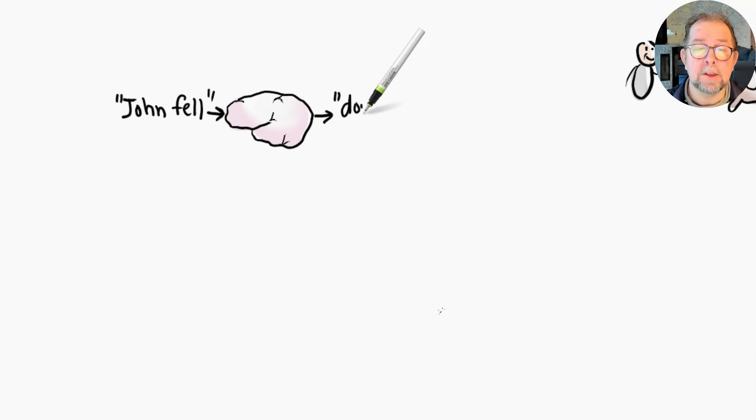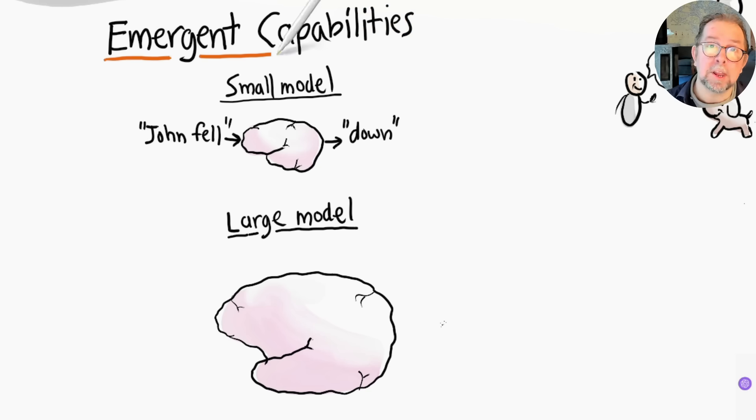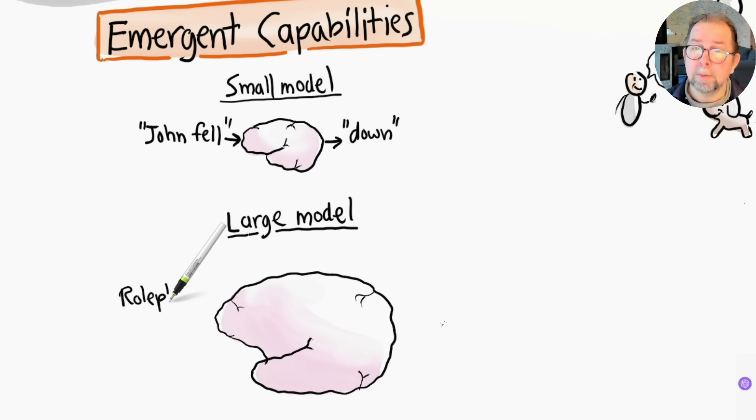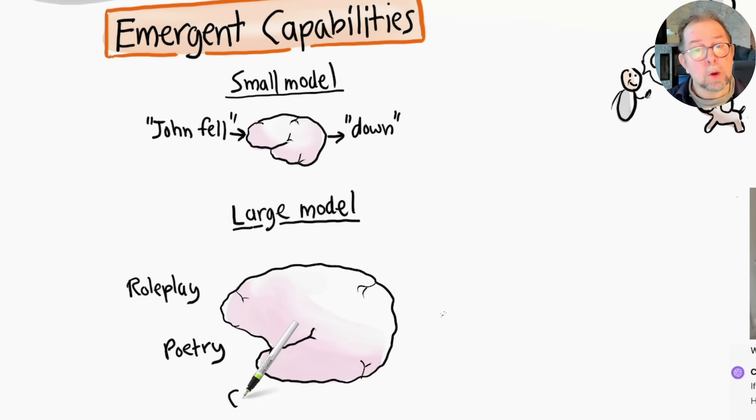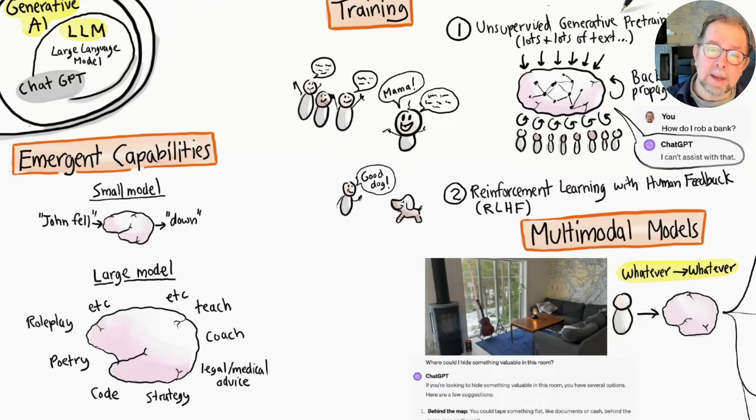Initially, language models were just word predictors, statistical machines with limited practical use. But as they became larger and were trained on more data, they started gaining emergent capabilities—unexpected capabilities that surprised even the developers of the technology. They could role play, write poetry, write high-quality code, discuss company strategy, provide legal and medical advice, coach, teach—basically creative and intellectual things that only humans could do previously. It turns out that when a model has seen enough text and images, it starts to see patterns and understand higher-level concepts, just like a baby learning to understand the world.